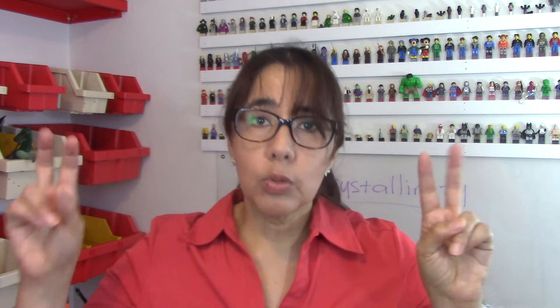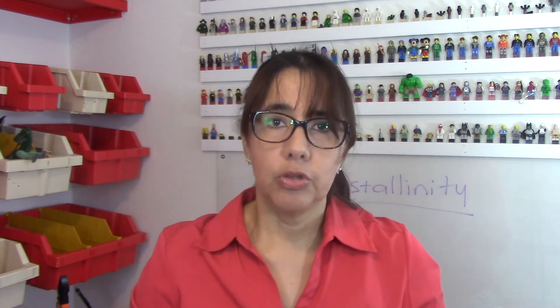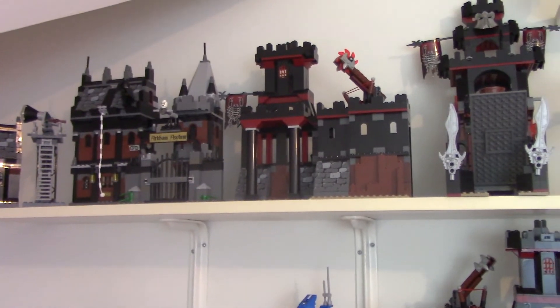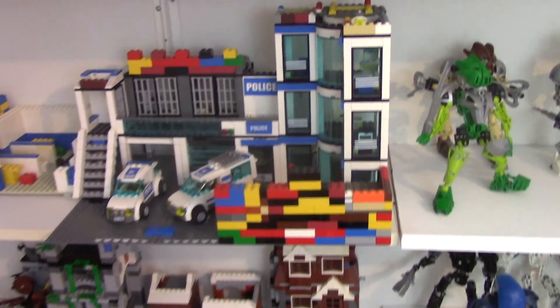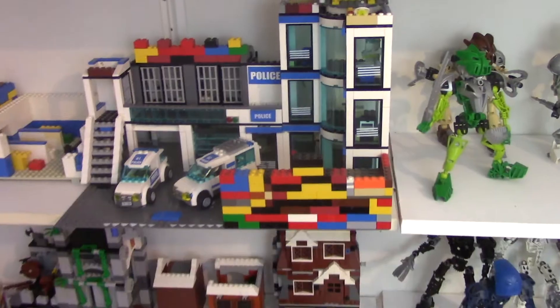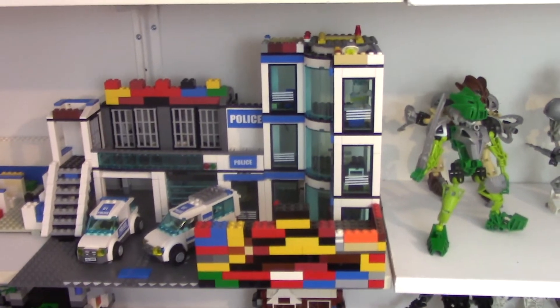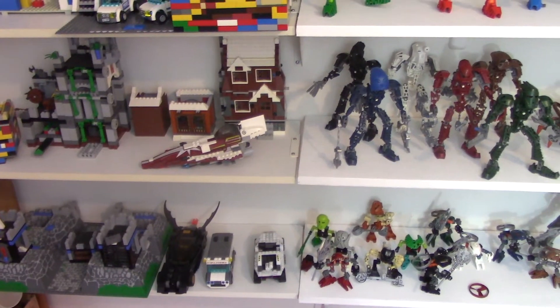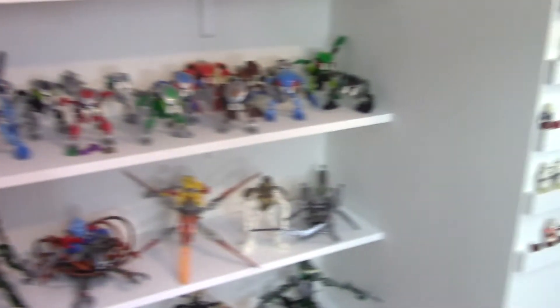Let's look at some crystalline materials. Here we see some Legos that are arranged. They have a pattern. They have a form. They have a shape. The Legos are stacked on top of each other.